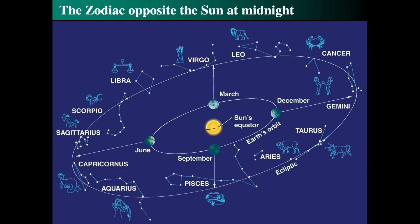We can look at what's in the night sky at midnight during these times. In September, Pisces is up at midnight. In December, Gemini's up at midnight, or at least 180 degrees away from the sun in the sky. In March, Virgo is 180 degrees away from the sun. And in June, Sagittarius is up.